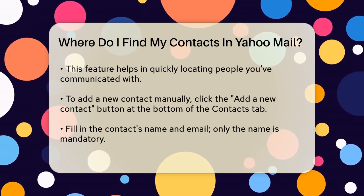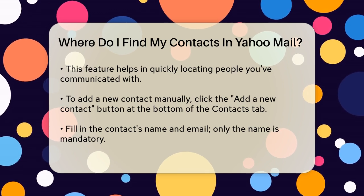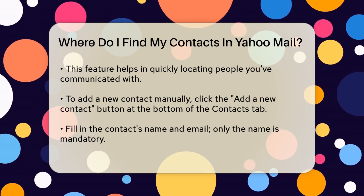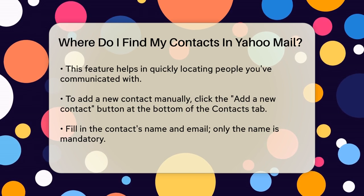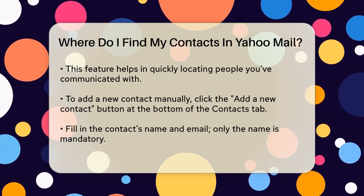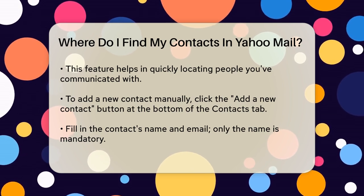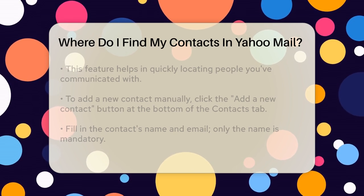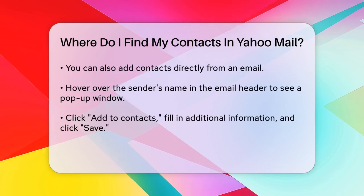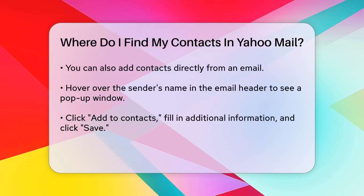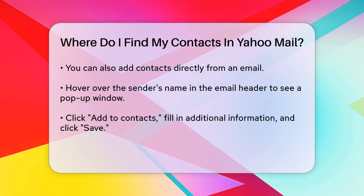If you want to add a new contact manually, it's simple. At the bottom of the Contacts tab, you'll see an Add a New Contact button. Click on this, fill in the necessary details like the contact's name and email, and then click Save. You don't need to fill in all the fields — just the name is mandatory.